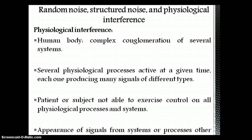The other important type of noise is physiological interference, which is actually an unavoidable type of noise. We know that the human body is highly complex in nature and consists of several subsystems. While extracting information from one subsystem, it is not possible to stop the functioning of the other subsystems. The appearance of signals from one subsystem interfering with the signal of interest is called physiological interference.